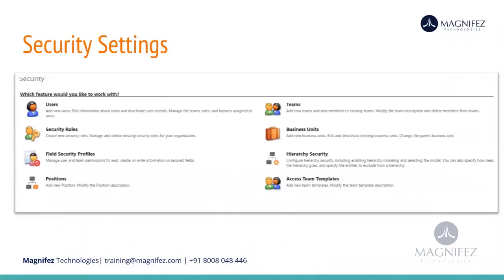In addition to that, you also should have one security structure for your organization — you have to set it up. It is not easy and not something you can directly go and create. You have to speak to your organization about splitting it into different business units. Especially for a bigger organization, you have to talk to the stakeholders, the owners of the company, or senior executives to get an idea about how their organization is presently structured.